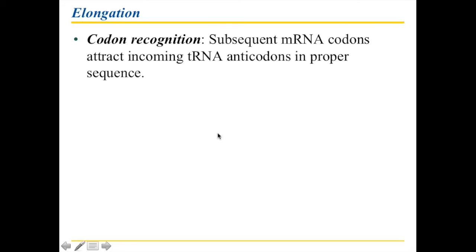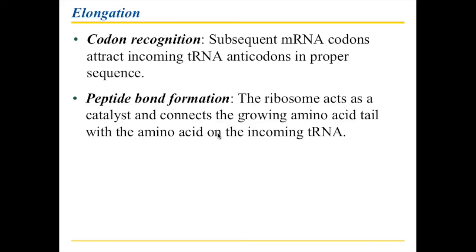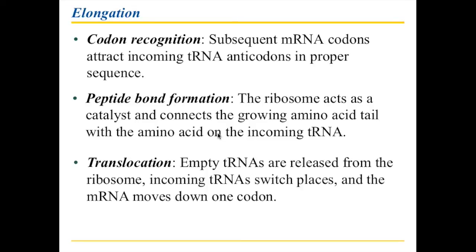The next step is elongation, which means these codons are recognized one after the other. Every time another one comes in, another tRNA will match it, and you end up assembling all the tRNAs in a proper order, so the amino acid chain grows in the proper order. The peptide bonds form — as soon as these transfer RNAs are next to each other, click, the peptide bond forms. It's a ratchet mechanism: you put one in, click, it moves over; you put another one in, click, the bond forms and it moves over. And so the amino acid is attached and the sequence grows. Translocation is what I meant when I said they move over — once the tRNA is empty, it gets moved away to be recharged.